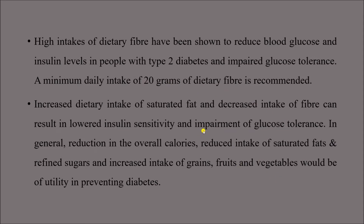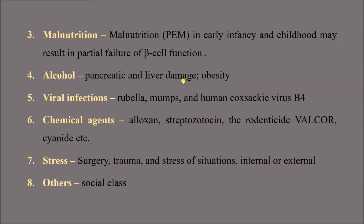Malnutrition — especially protein-energy malnutrition in early infancy and childhood — may result in partial failure of beta cell function. Alcohol damages the pancreas and liver and can lead to obesity and then diabetes. Viral infections like rubella, mumps, or human coxsackie virus B4 are associated with diabetes. Chemical agents like alloxan, streptozotocin, and rodenticide Vacor, cyanide, etc., as well as stress from surgery, trauma, or other situations, can also lead to diabetes. Social class is another factor.